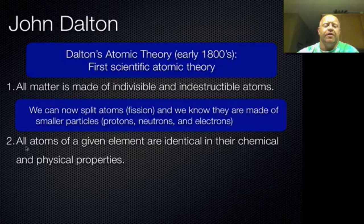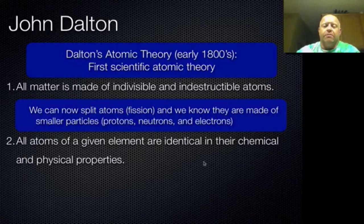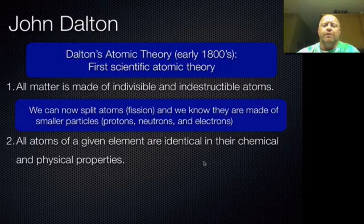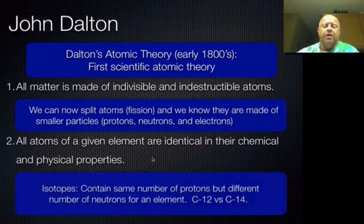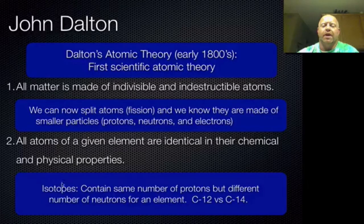His second part of his theory tells us that all atoms of a given element are identical in their chemical and physical properties. That sounds like a pretty good statement, but there's one small piece that's a little bit mistaken. He says all atoms of an element are identical. We now know that elements have multiple versions of them called isotopes, so again, a slight modification on his original theory to talk about what an isotope is.